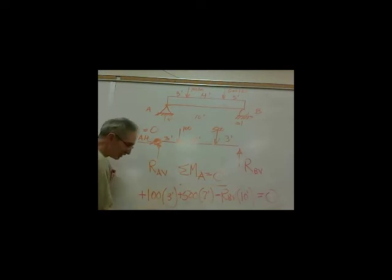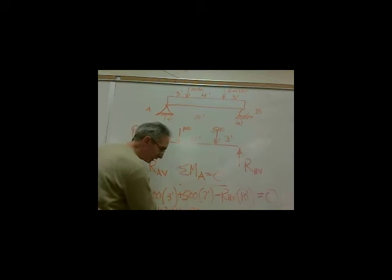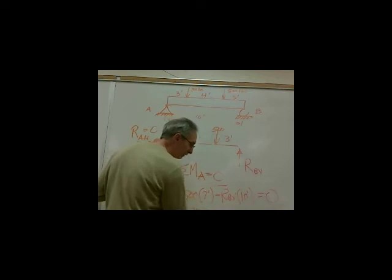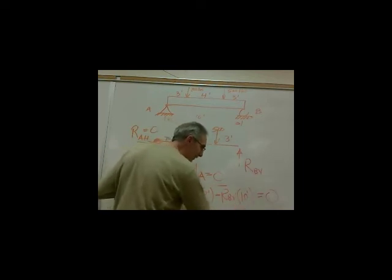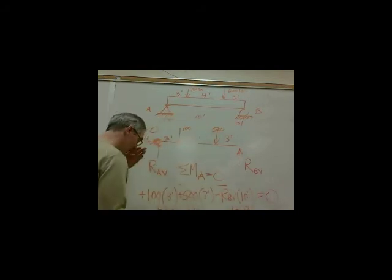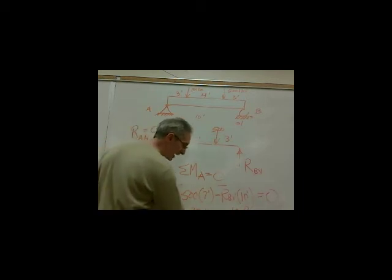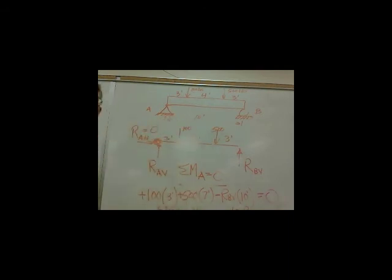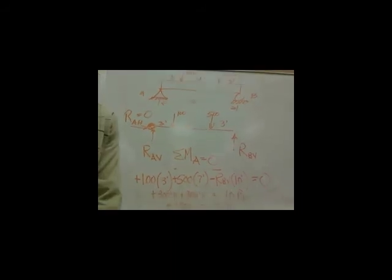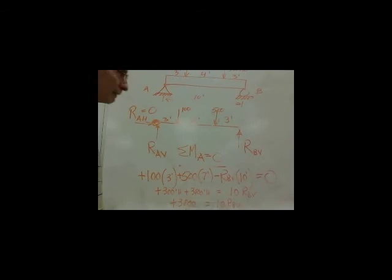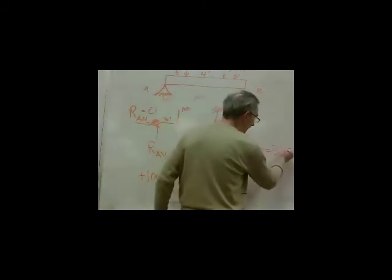So now I'll just do the math. This is plus 300 foot-pounds. This is plus 3,500 foot-pounds. And this is minus 10 feet, R, B, V. I'll bring it to the other side. It becomes positive 10, R, B, V. So this is plus 3,800 equals 10, R, B, V. I'll divide through by 10. What does R, B, V come out to be? 380 pounds. I've got R, B, V is equal to 380 pounds.